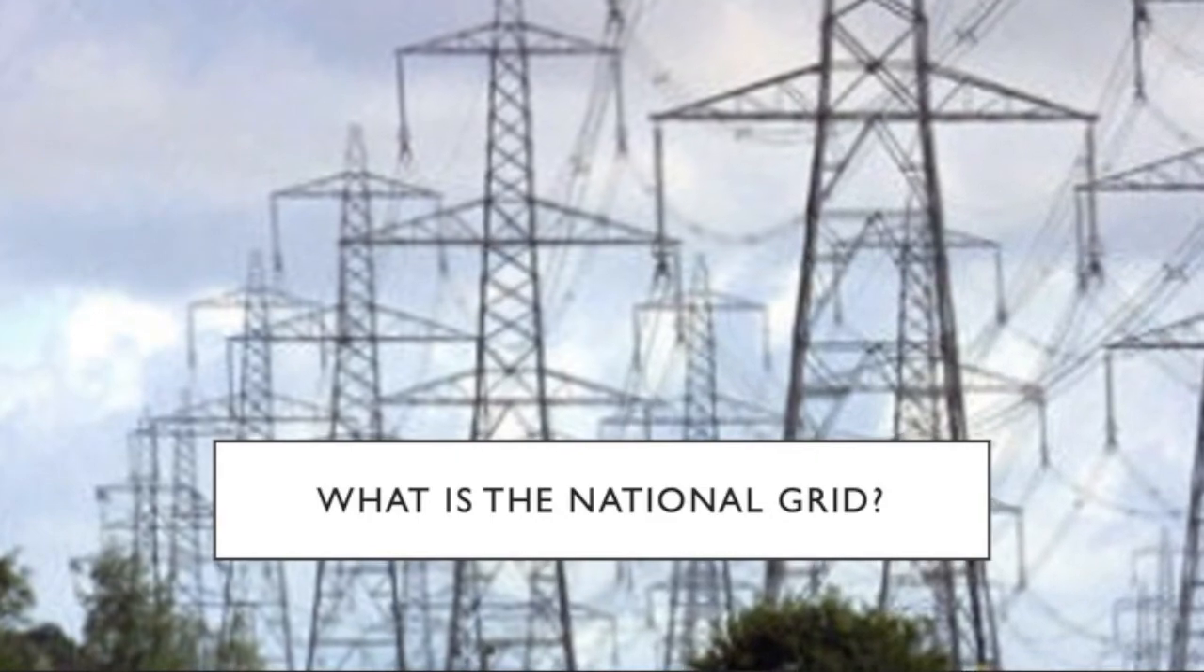So what is the national grid then? The national grid is the name given to the network of cables and transformers that transport electricity from the power stations in Britain to homes, factories, offices, shops, and other places that require it. So the national grid is the network of cables and transformers that transfer the electricity from the power stations to the factories and homes.